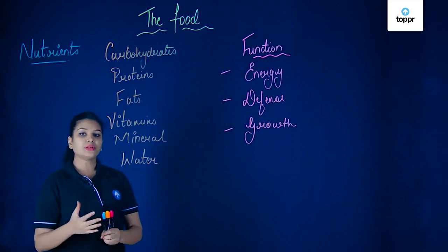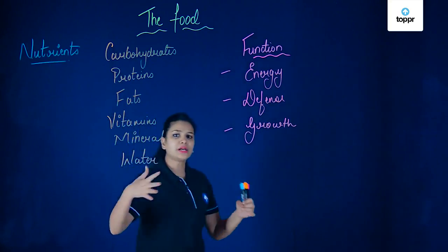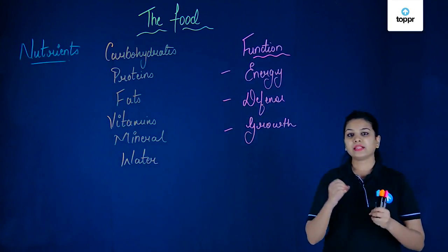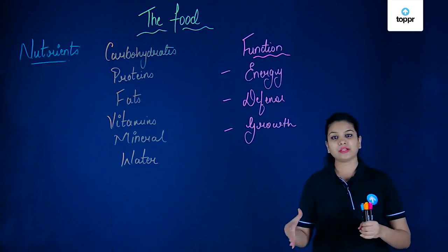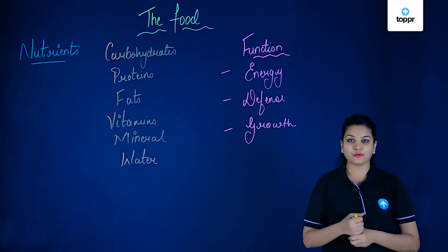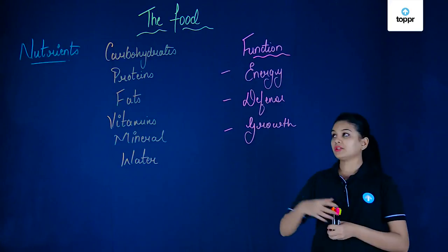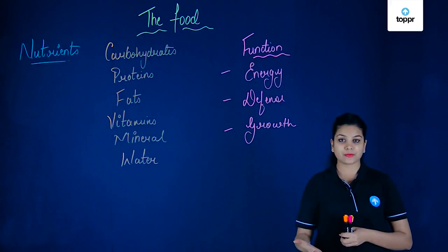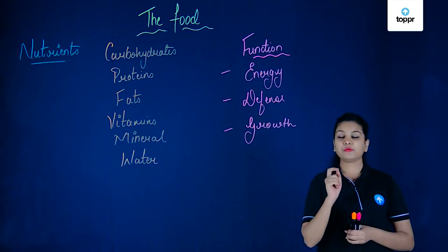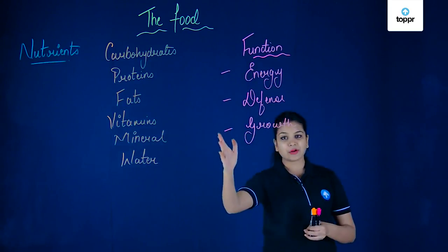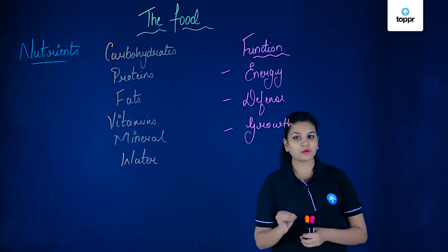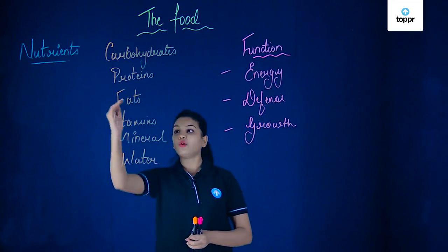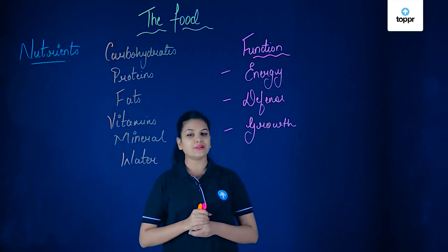This food we can get in different parts of the world. For example, in India itself, different parts of the country have different varieties of food. Some foods can be rich in carbohydrates, some can be rich in proteins, fats, etc. But it is very important for you to know that to get these functions done by your food, you have to have a proper balanced diet which should contain all of these nutrients in the right amount.